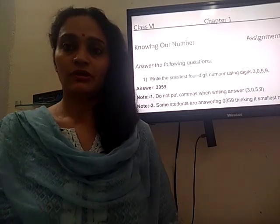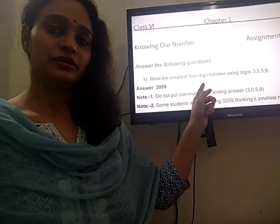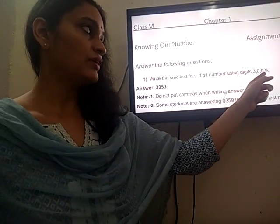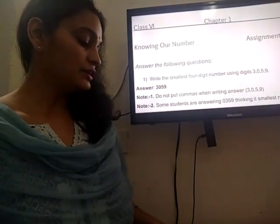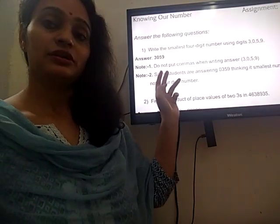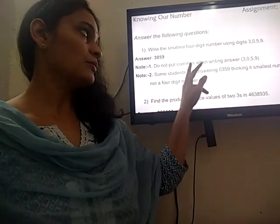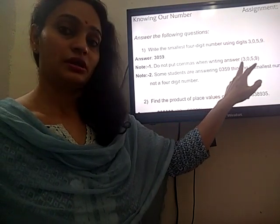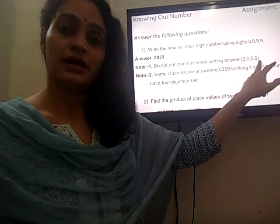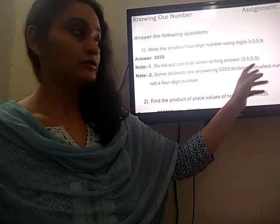Question number 1 was: write the smallest 4-digit number using the digits 3, 0, 5, 9. The answer is 3059. Students, please remember — do not put commas when you are writing your answer, because 3,0,5,9 is a wrong way of writing your answer.